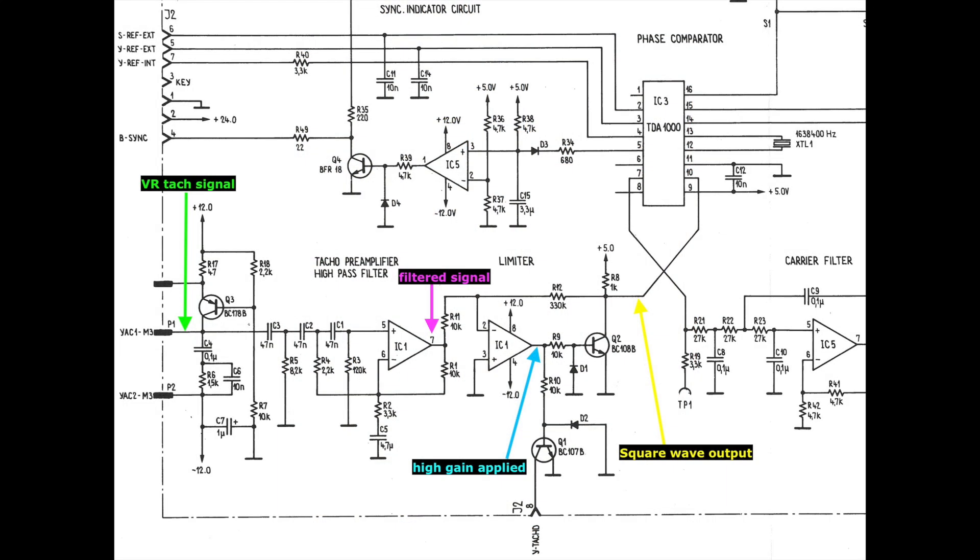This is the Revox Mark II capstan signal processing schematic. Starting at the left, the VR sensor is connected across pins P1 and P2,